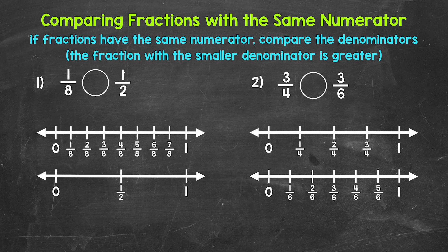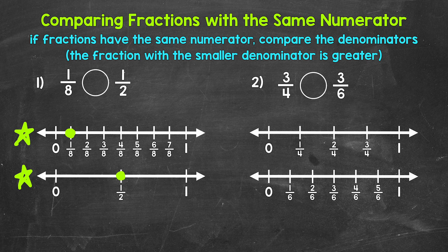So we have two number lines down below. One number line is showing eighths, and the other number line is showing halves. One of the number lines is showing one whole — between zero and one — divided into eight equal parts. The other number line is showing one whole — between zero and one — divided into two equal parts. Let's start by marking one eighth on this number line right here. One eighth is right here. Now let's mark one half on this number line. One half is right here. Which fraction is greater? Which fraction is further to the right on a number line?